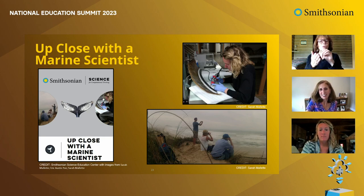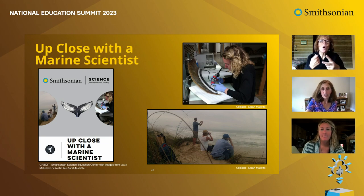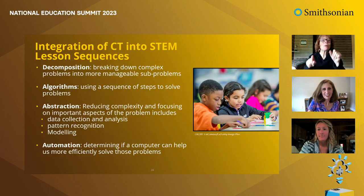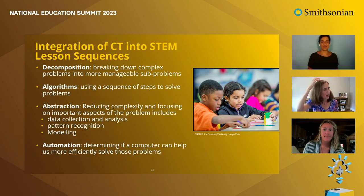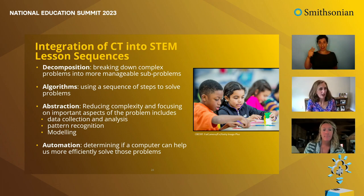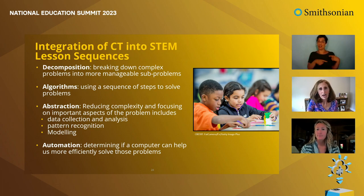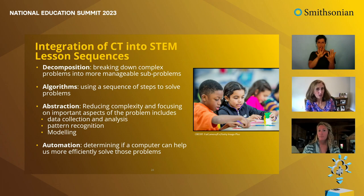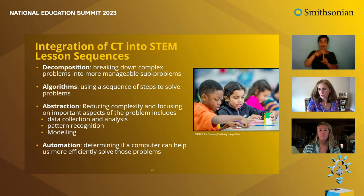Students can also read a post with a marine scientist to learn more about Sarah's career as a marine scientist and conservationist, and see how the work they've done in the unit mirrors her real work. Now, looking at the chat, it looks like people identified data analysis, modeling, and pattern recognition — definitely heavy on abstraction so far. As we move into the last part of the unit, students are going to use automation — using a computer to more efficiently solve the problem.